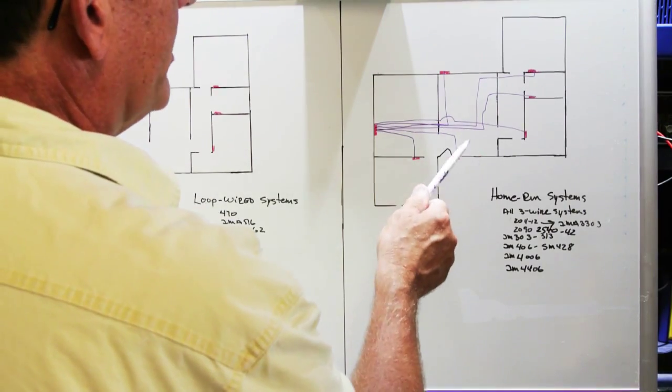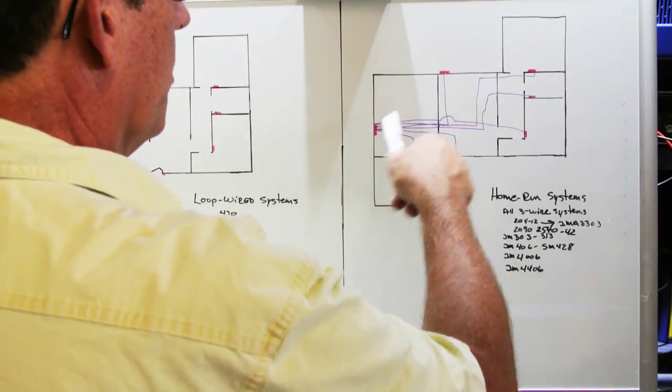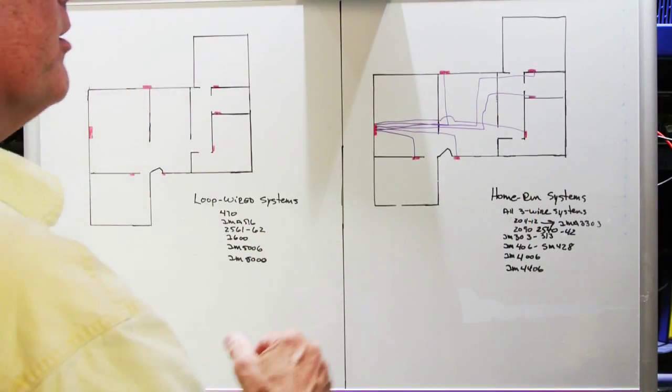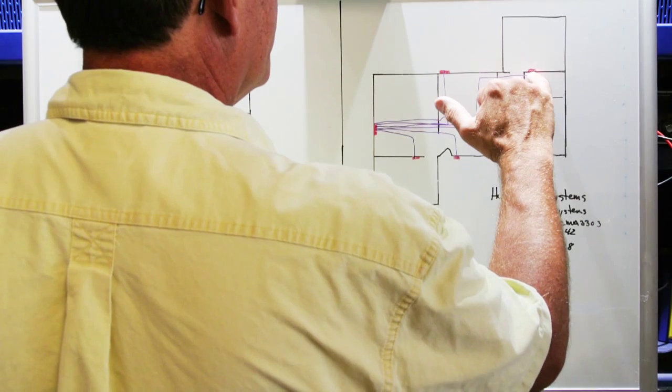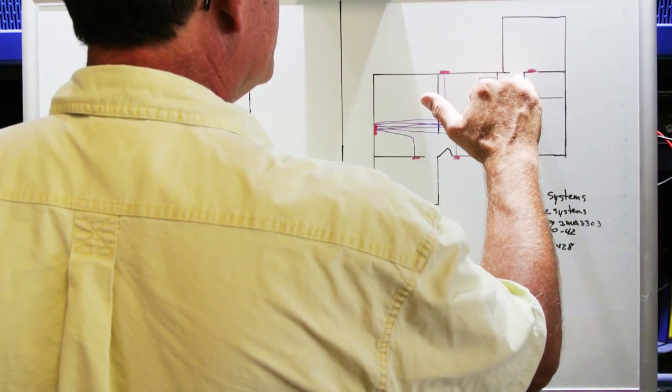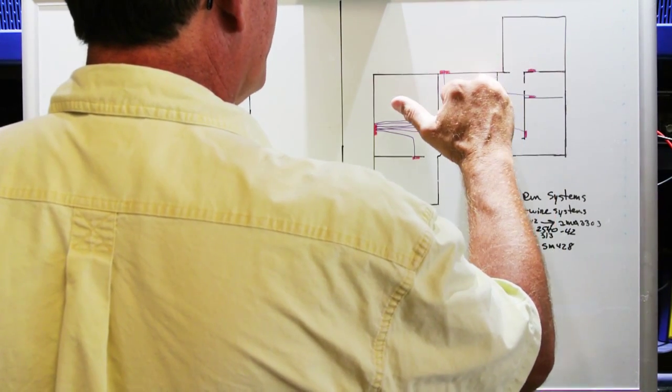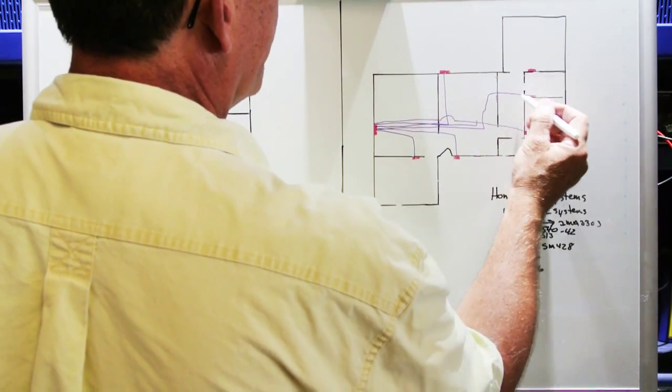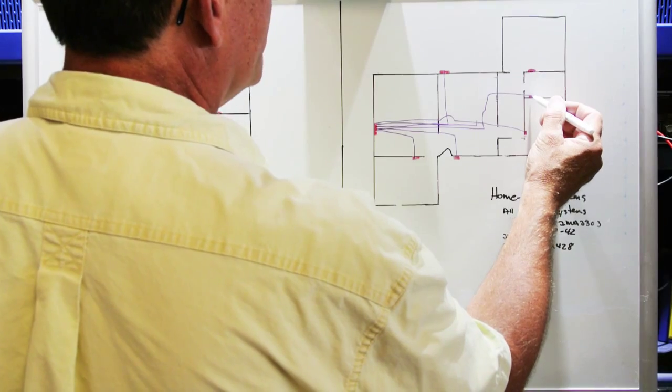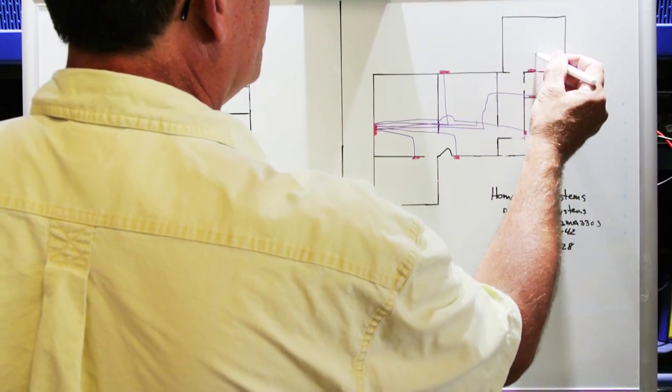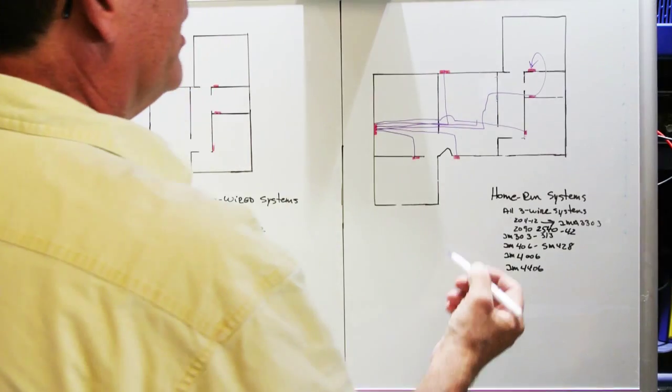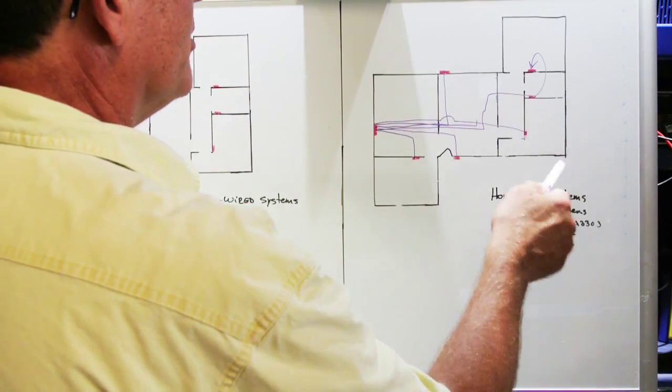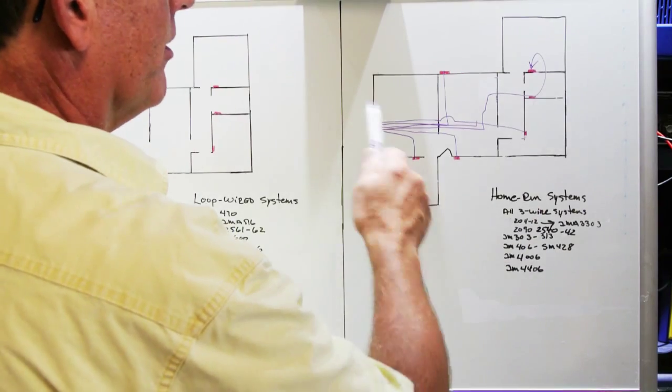Again, equipment that's designed to be installed in a home run manner can only be installed in a home run manner. If you think you're going to be clever and this far bedroom speaker is too far away and you didn't buy enough wire and you think, well, I've already run a wire to this room, so all I have to do is take a wire from here and loop it over to here and tie it in. Guess what? Won't work, especially on three wire systems. Absolutely positively will not work ever. No way.